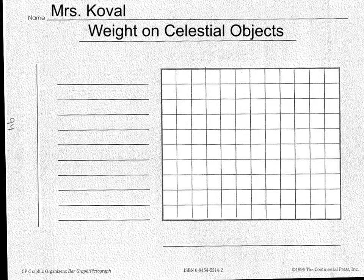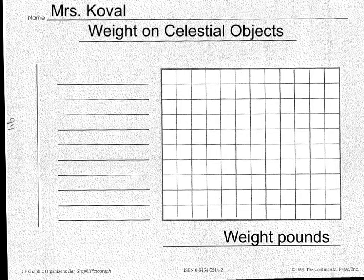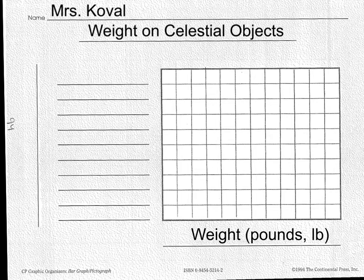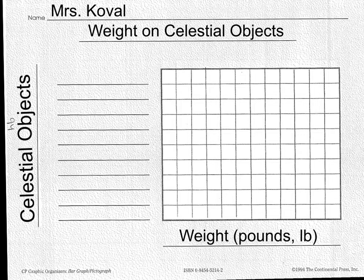So we're going to first label the x and y-axis. The x-axis is going to be weight, and that's going to be in pounds. Then we're going to label the title of the y-axis, which is going to be celestial objects. So now we have weight in pounds on our x-axis and celestial objects on our y-axis.